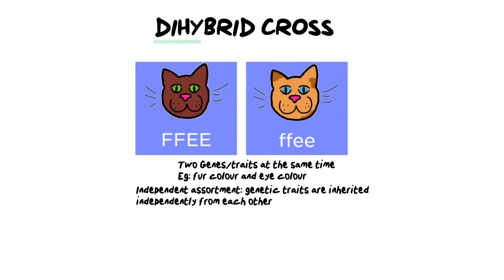This law states that our genetic traits are inherited independently from each other. What that basically means is that your eye color isn't linked to your skin color. In these cats, not all dark brown cats will have green eyes and not all cream colored cats will have blue. You inherit your eye color and blood group separately and independently from one another.